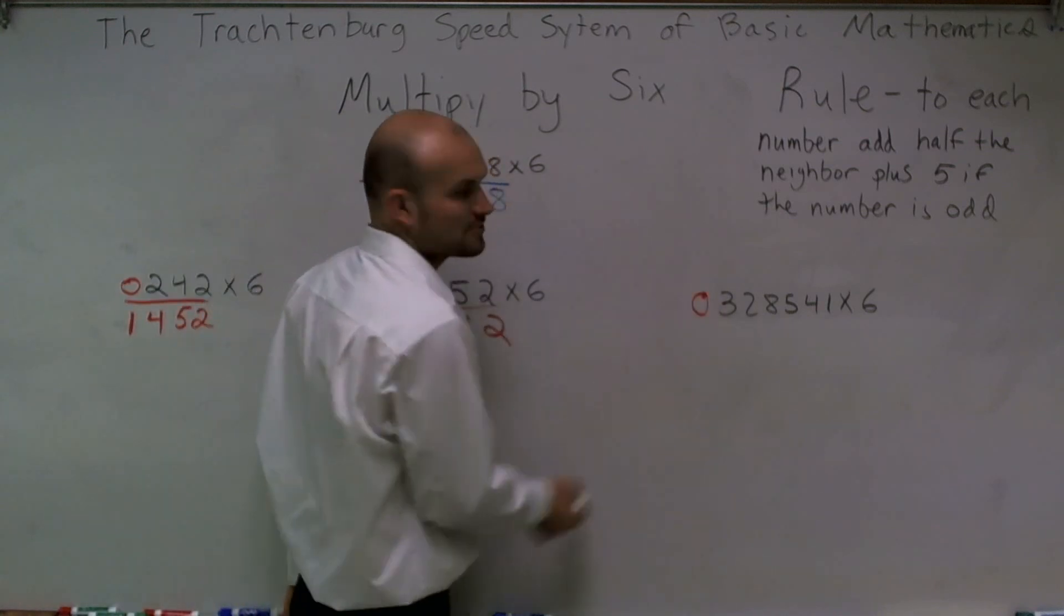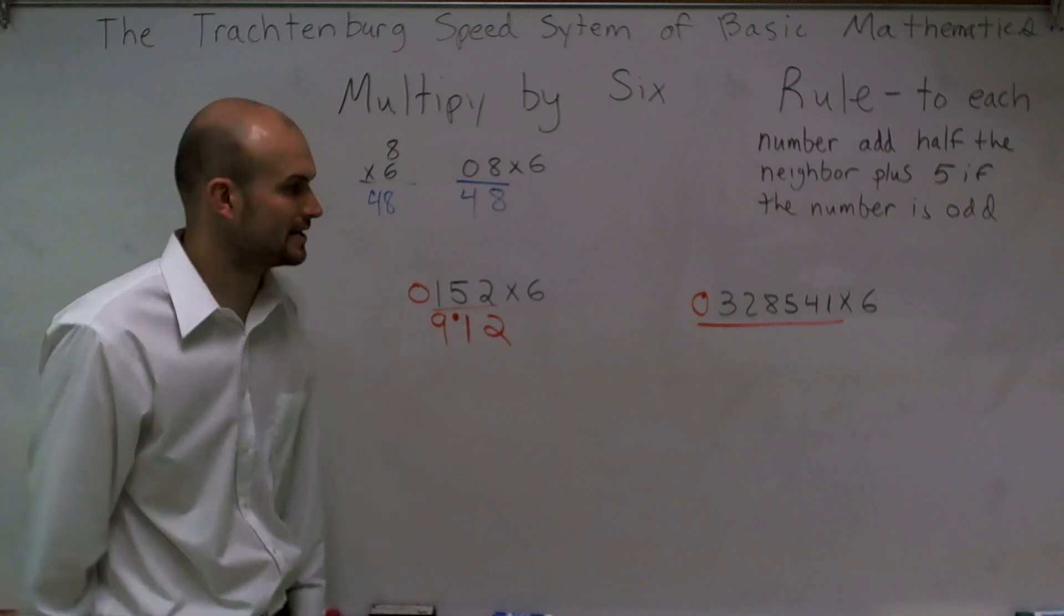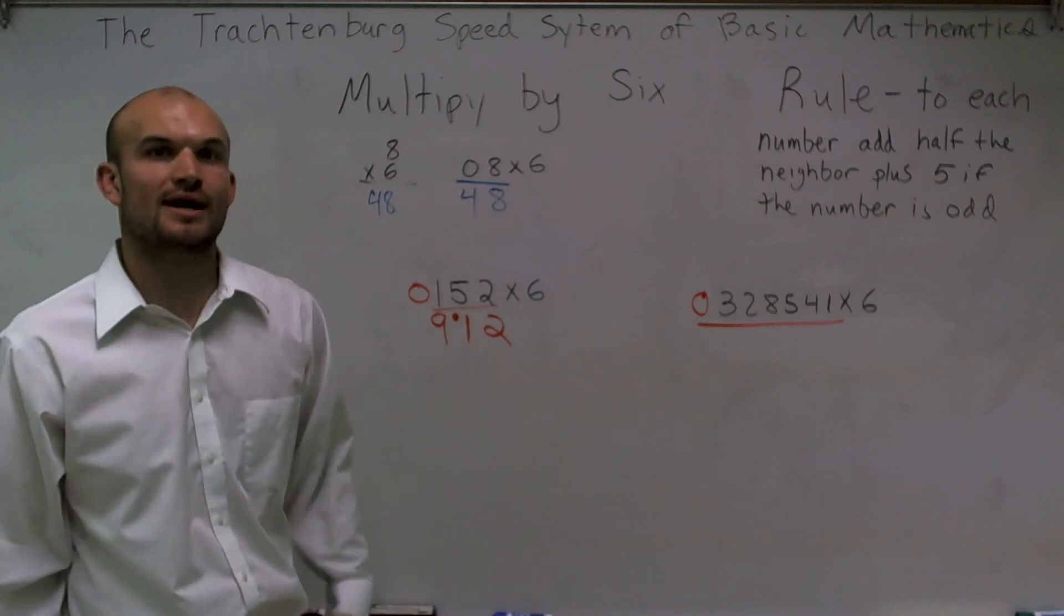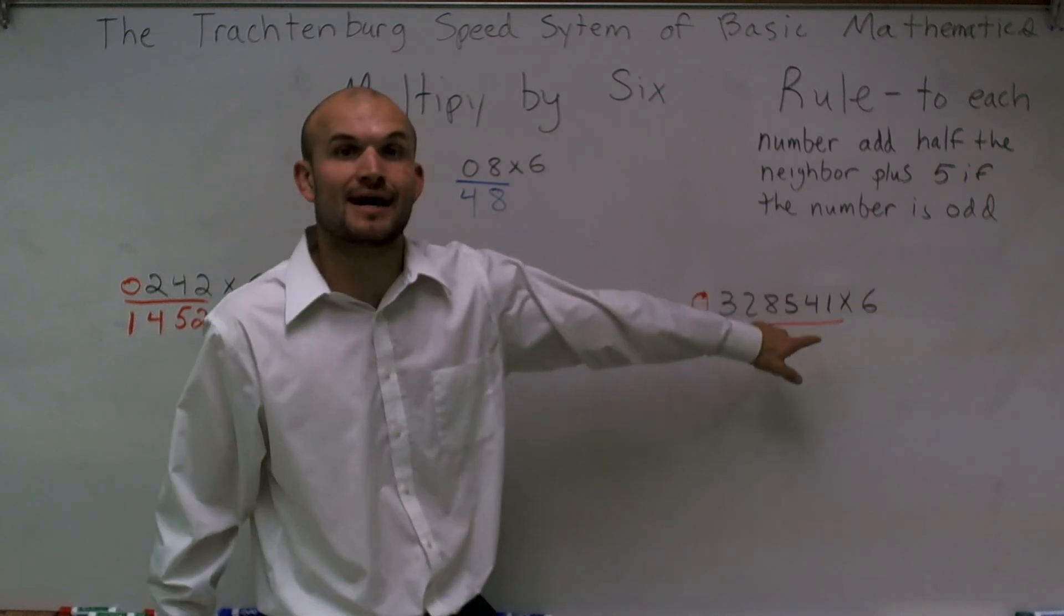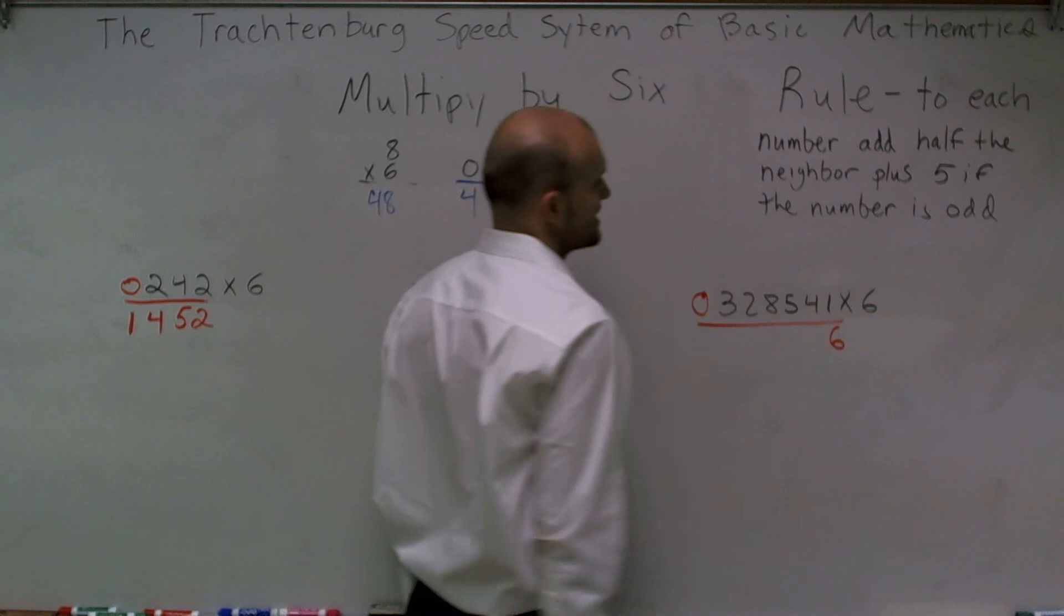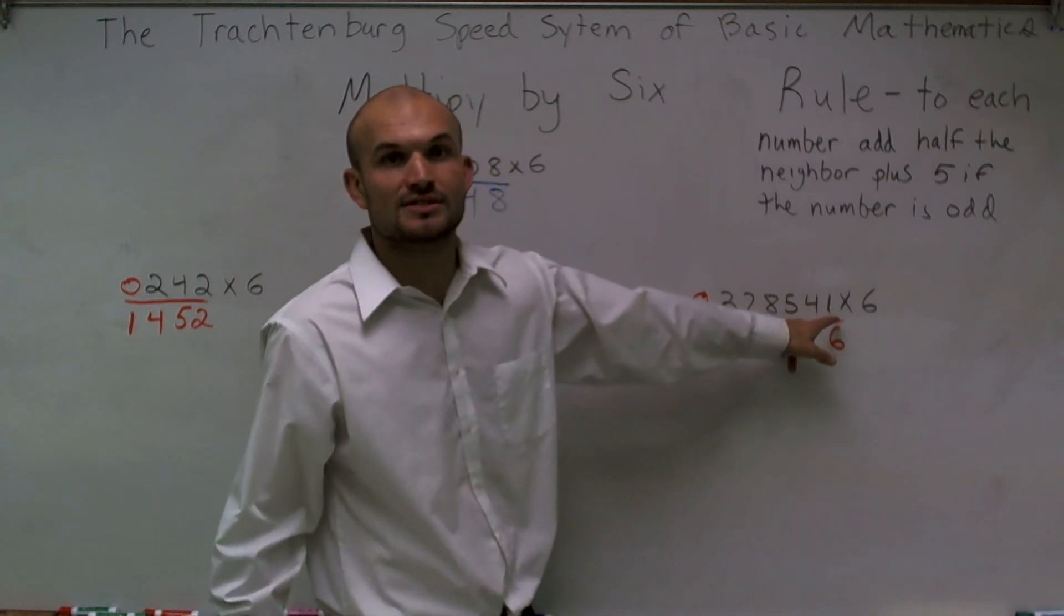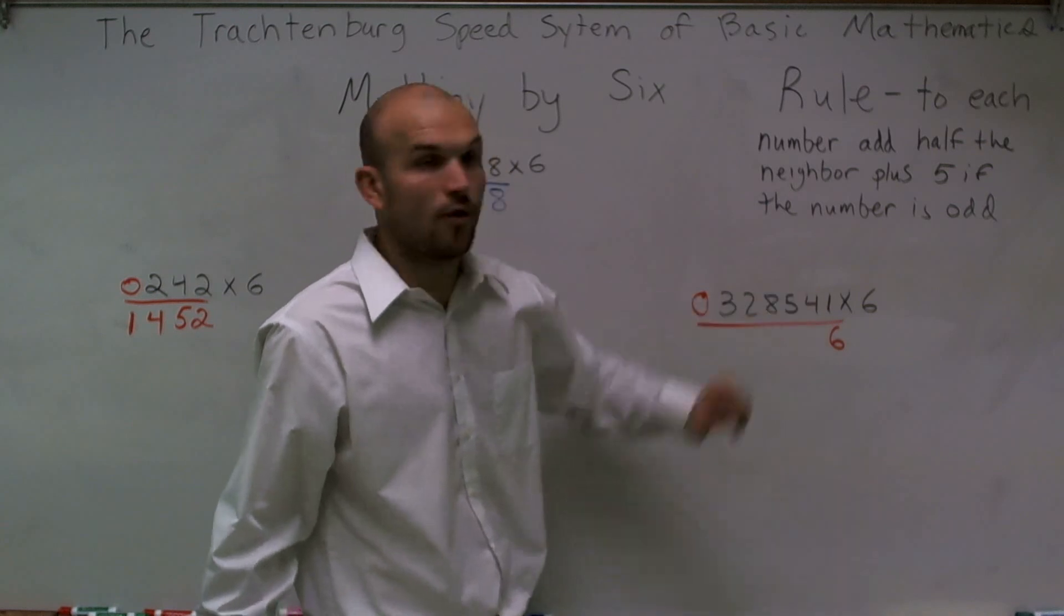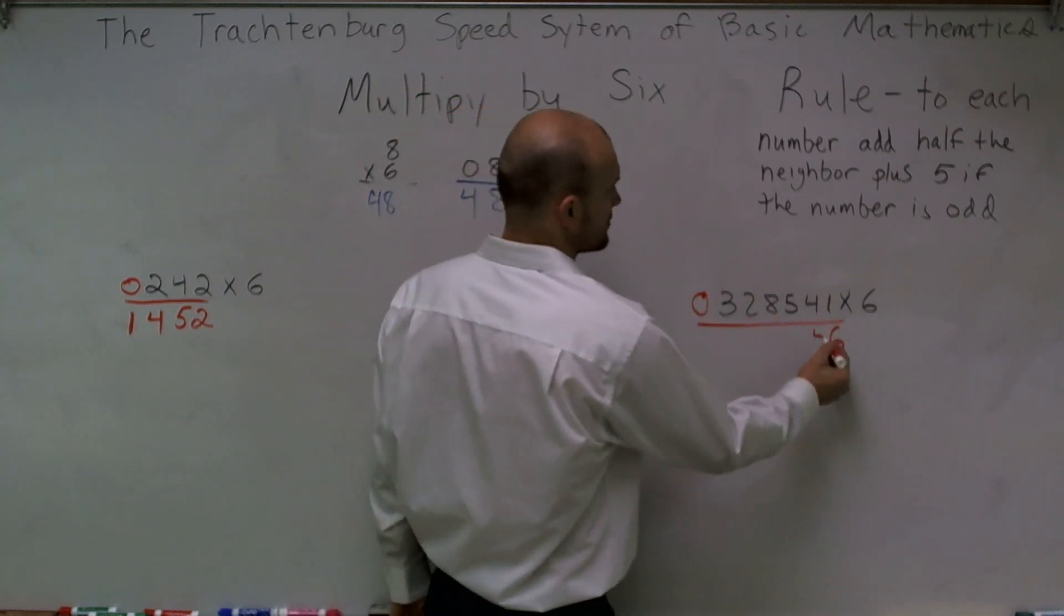So let's make sure the first thing we do is put that zero so I don't forget that again, and then underline it. So again, let's go ahead and work our numbers. Since my one is odd, I need to make sure I add five. One plus five is six, I'll bring it down. I take my four, add half of one, which is—half of one is zero. So four, four plus zero is going to be four.